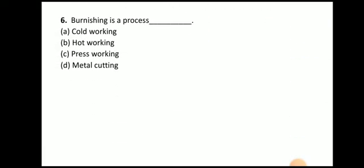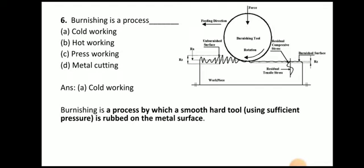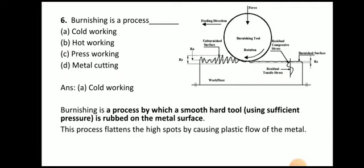Next question: burnishing is a process of — cold working, hot working, press working, or metal cutting. In burnishing we have one cylindrical object that rotates against the irregular surface, and whatever irregularities are present get removed with the help of the burnishing tool. It is a cold working process. Burnishing is a process by which a smooth hard tool using sufficient pressure is rubbed on the metal surface. This process flattens the high spots by causing plastic flow of the metal, and hence it is known as a cold working process.